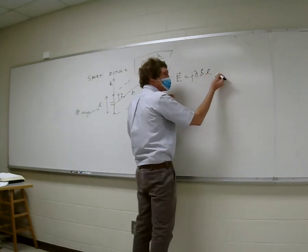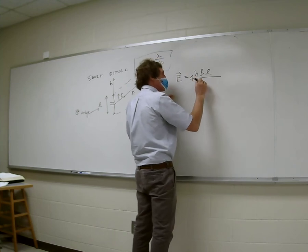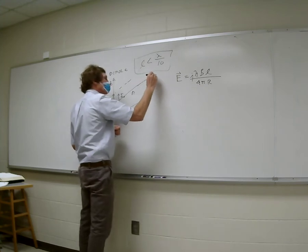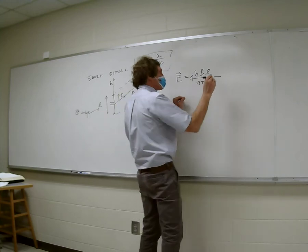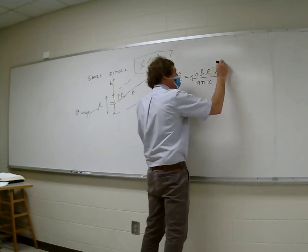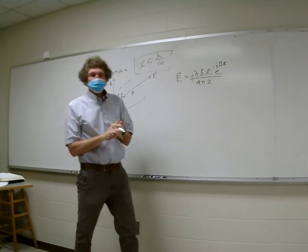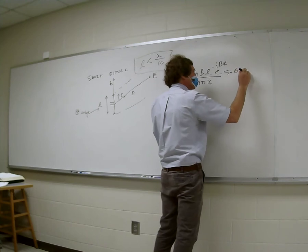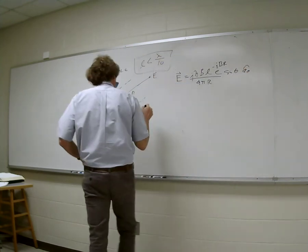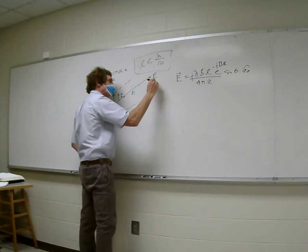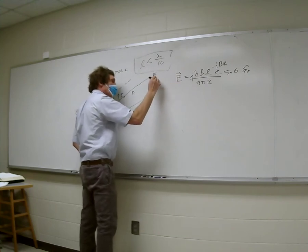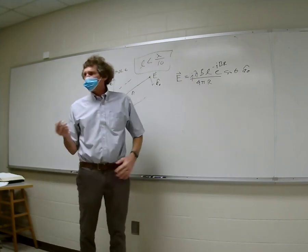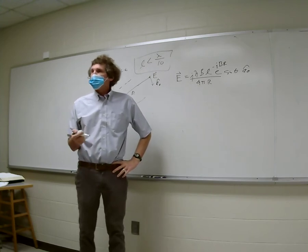The E field is always proportional to the length, and it will be divided by 4πr, where r is the radial distance to the point of observation. It has a factor e^{-jβr}, a sine-of-theta dependence, and the field itself is in the A_theta direction — meaning the electric field is in that direction.